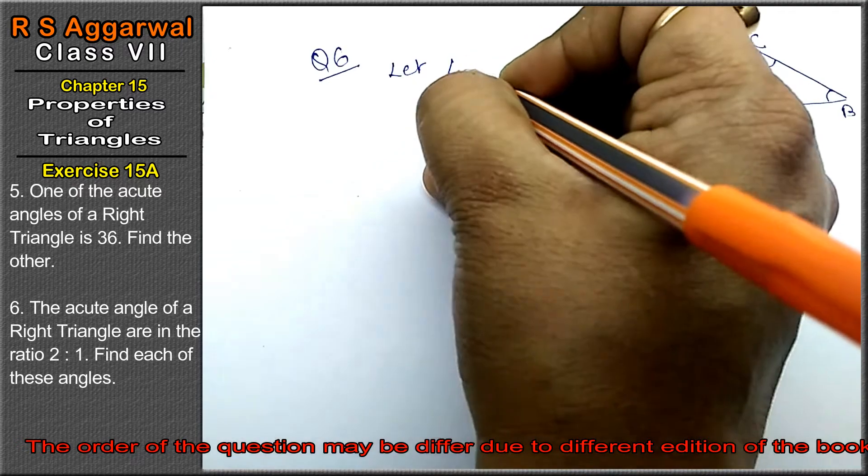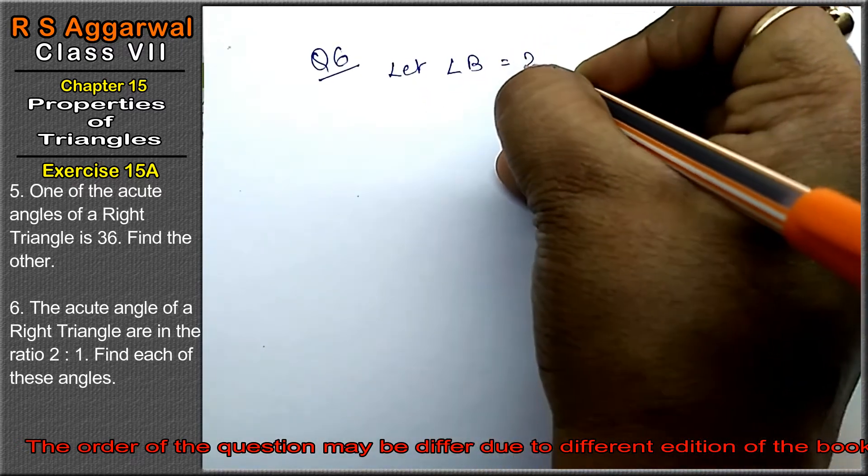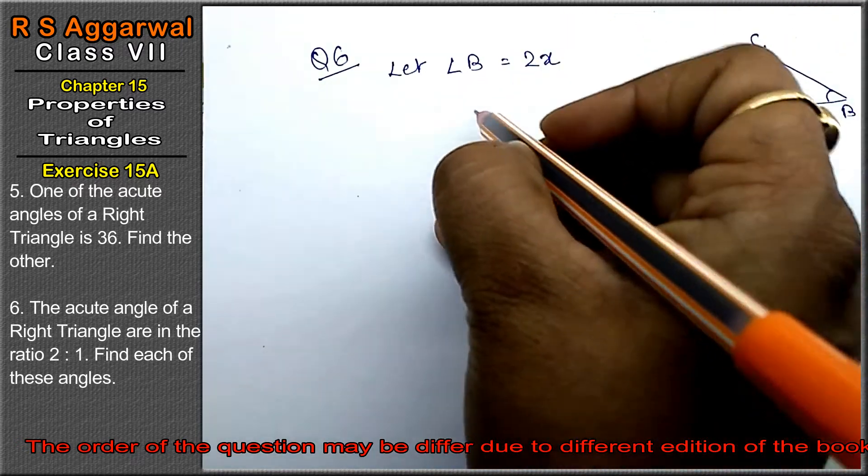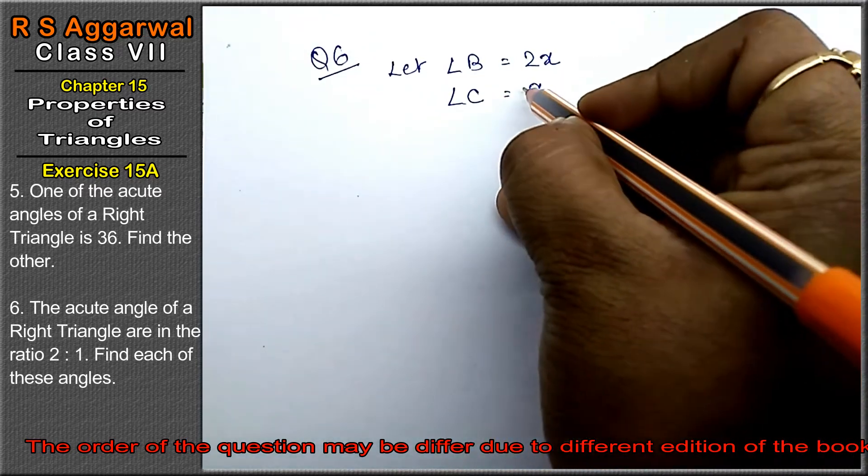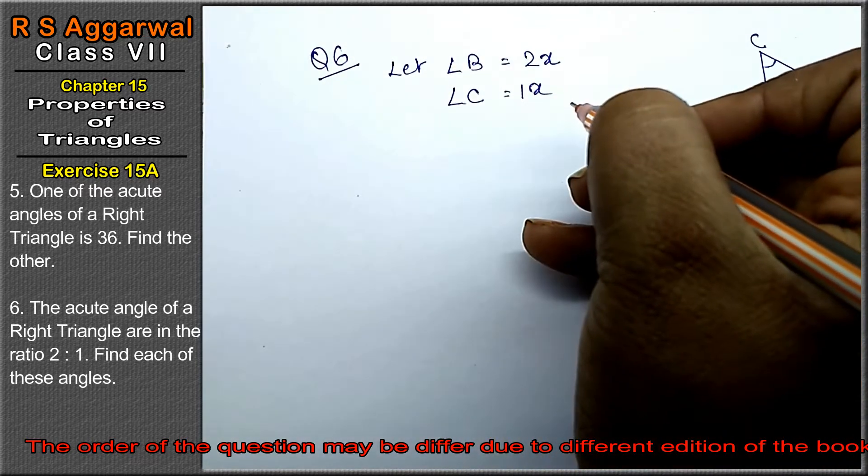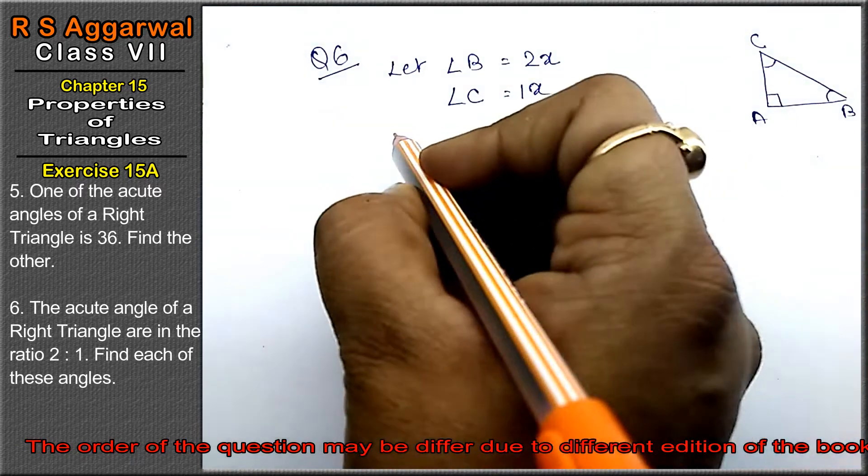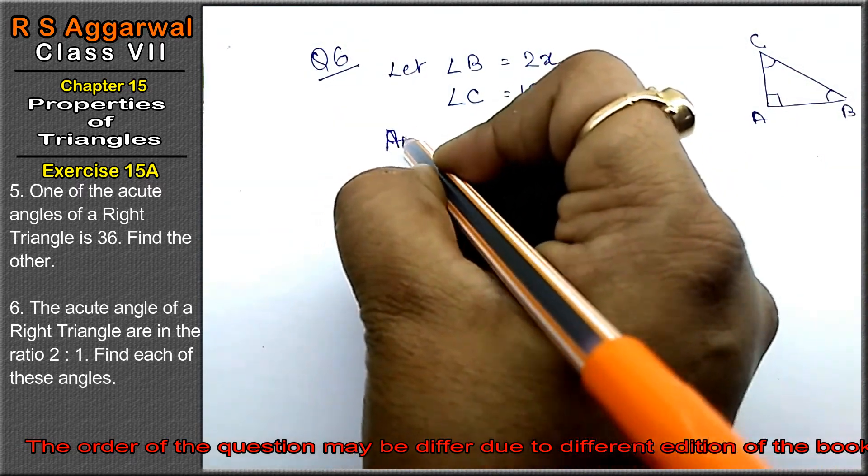Let angle B equal 2x, so angle C is equal to x. Right, friends? It is 2x and 1x.